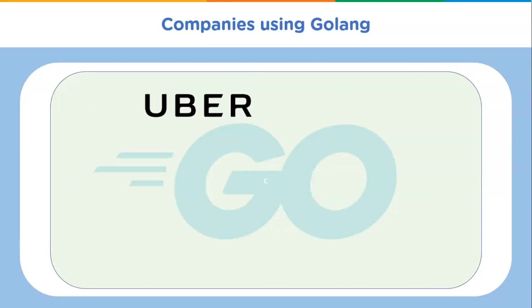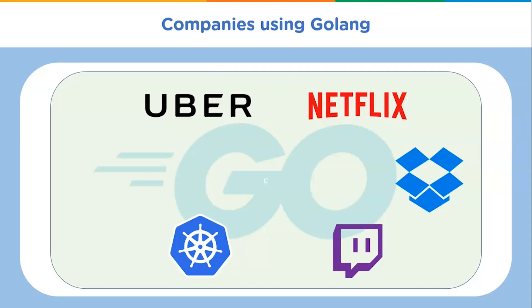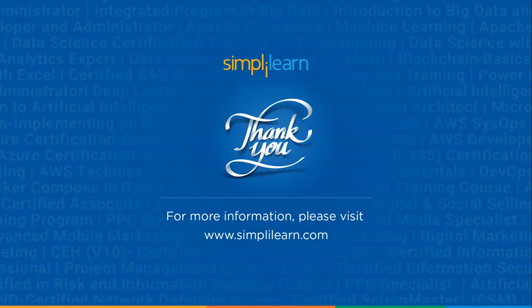Now we'll see some companies using Golang. Uber, a ride-hailing platform, uses Go within its microservices. Kubernetes is an open source container orchestration system used to automate software deployment, scaling, and management — designed by Google and maintained by the Cloud Native Computing Foundation. Dropbox has migrated some major components from Python to Go. Netflix uses Go to develop its server architecture. Twitch uses Go for many of its busiest systems. SoundCloud uses Go to perform static analysis in real time, enabled by static typing and fast compilation.